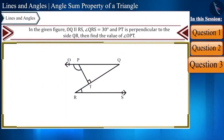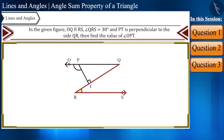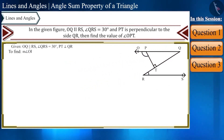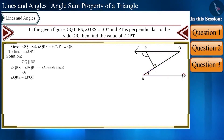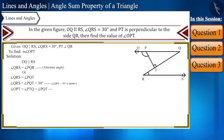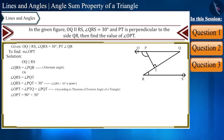Final question: OQ is parallel to RS, angle QRS equals 30 degrees, and PT is perpendicular to QR. Find angle OPT. Since OQ is parallel to RS, angle PQT equals angle QRS equals 30 degrees (alternate angles). By the exterior angle theorem: angle OPT equals angle PTQ plus angle PQT equals 90 plus 30 equals 120 degrees. Today we solved some questions related to angle sum property and the exterior angle theorem.